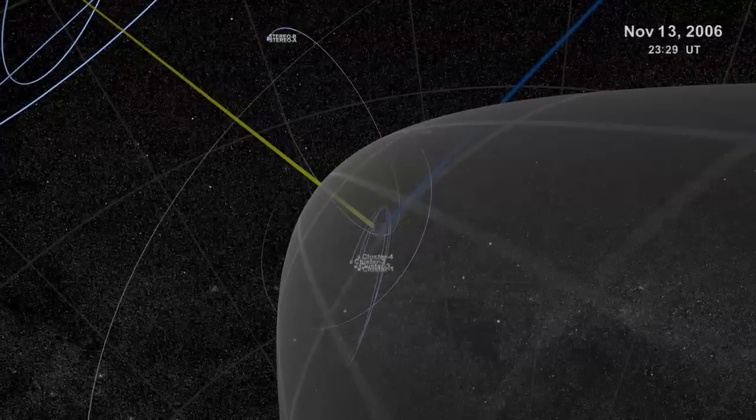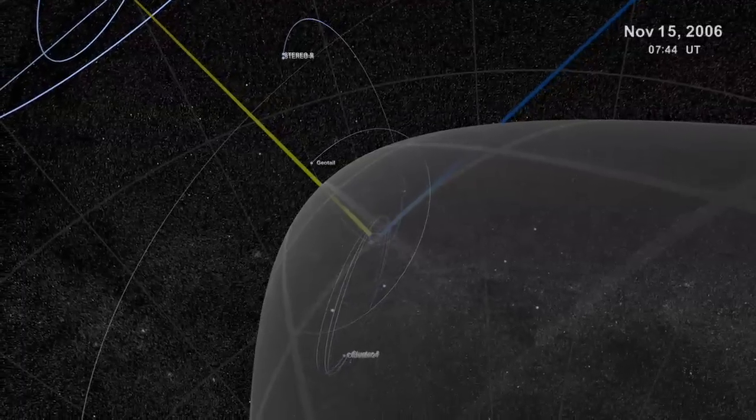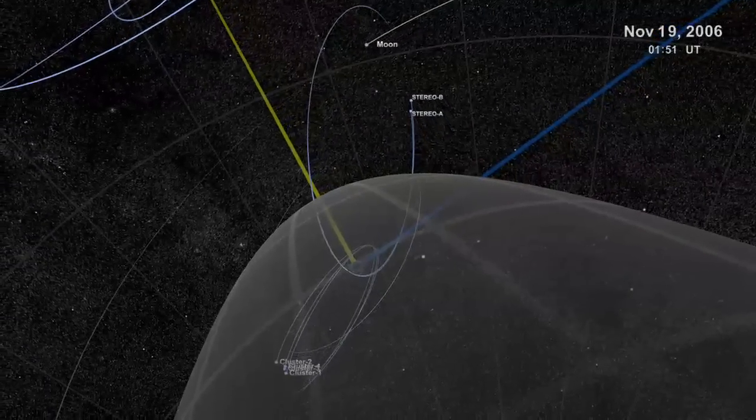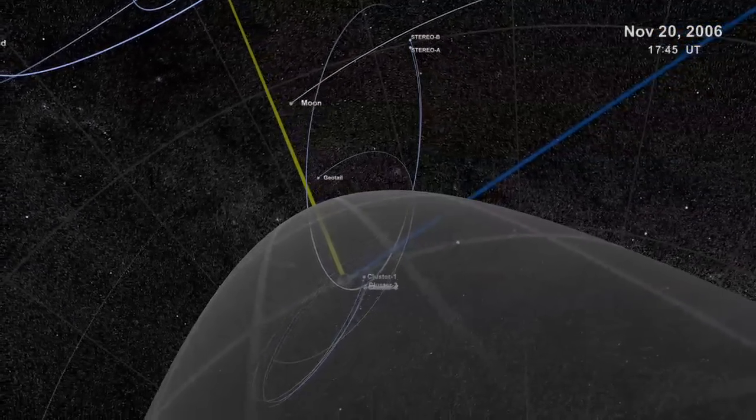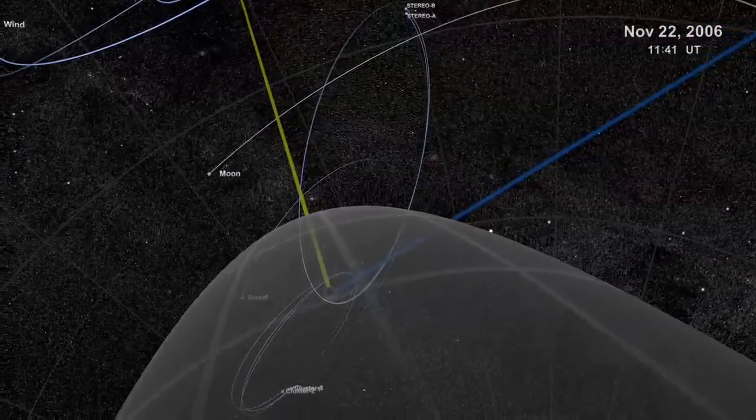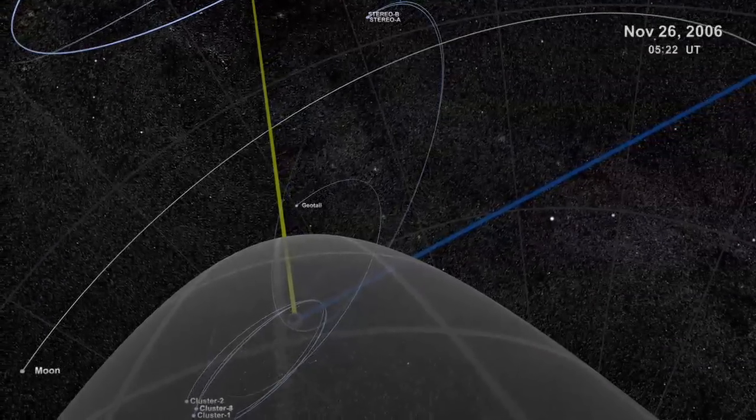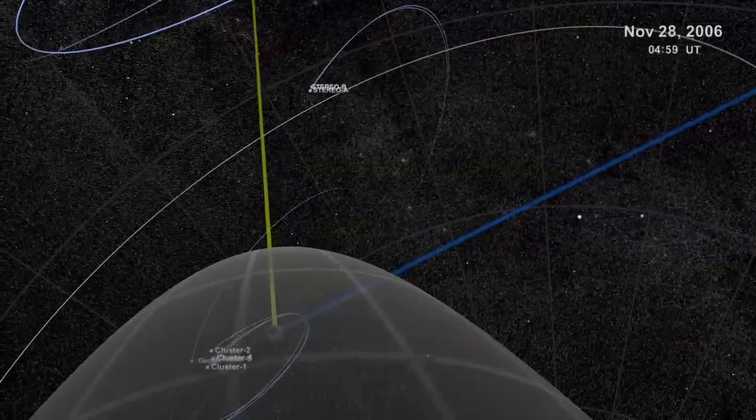The cluster vehicles are on a high elliptical flight path. Geotail makes a lazy loop all alone. The two stereo satellites fly in relatively close formation, but they won't stay that way for long.